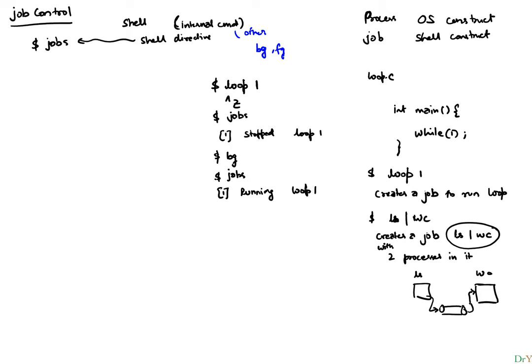As we launch more and more jobs, for example if I run another job and I put an editor in the background, it'll tell me that this is a process running in the background. It'll say one and two — when you launch it, it'll tell you there are two processes. If I run jobs, I'll see that there's one which is loop, and another one that says Emacs is also a job running in the background. There are two jobs currently.